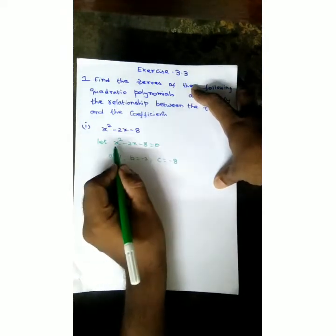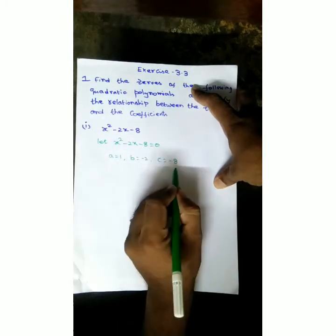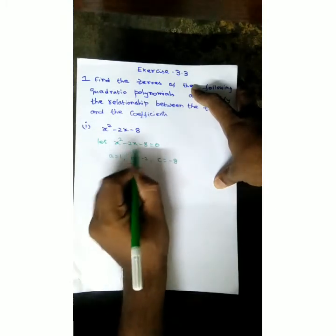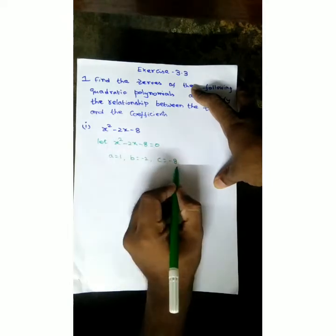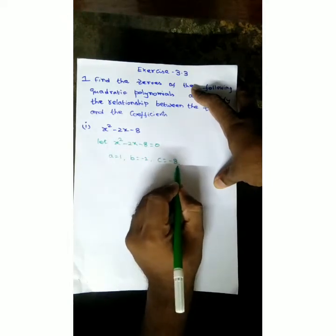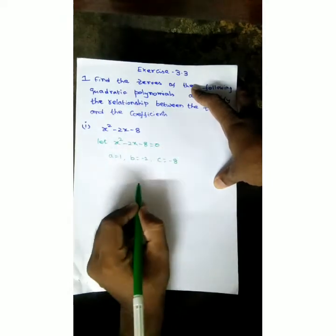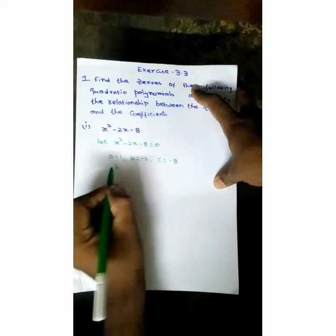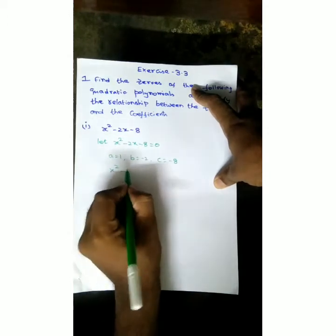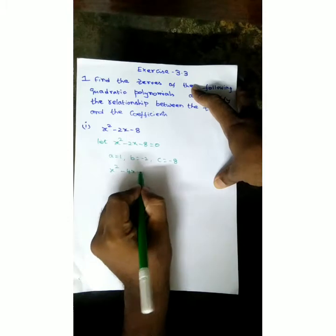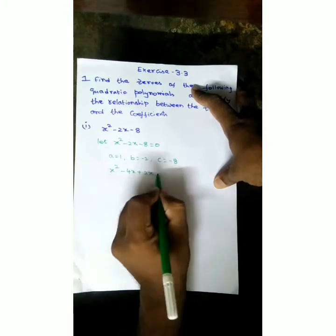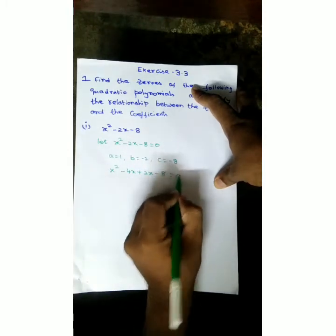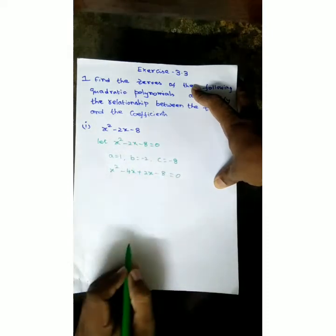Here we have 1 into minus 8, which is a into c. To split the middle term into two parts, we need the factors of 8. 4 times 2 is 8, and the difference of 4 and 2 is 2. So x square, and here minus. The larger number gets the minus. So x square plus 2x minus 4x minus 8 equal to 0. Minus 4 plus 2 gives minus 2 as required.